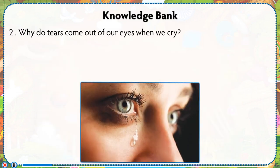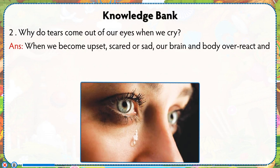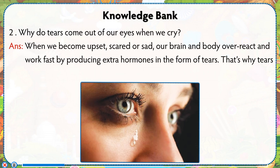Why do tears come out of our eyes when we cry? When we become upset, scared or sad, our brain and body overreact and work fast by producing extra hormones in the form of tears. That is why tears come out of our eyes when we cry.